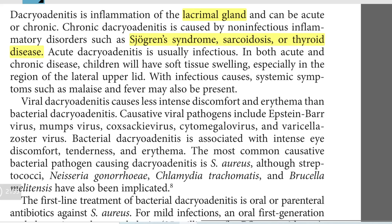So mostly acute will be infectious, chronic will be Sjogren syndrome, sarcoidosis, or thyroid disease. In both acute or chronic cases, children will have soft tissue swelling, especially in the region of the lateral upper eyelid.